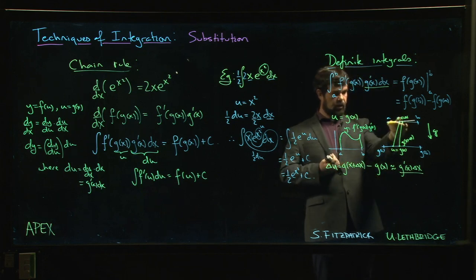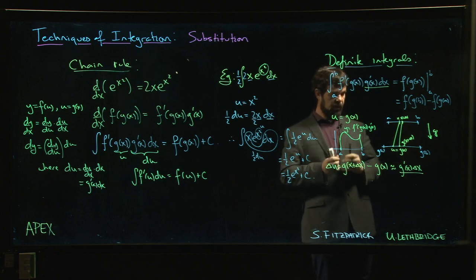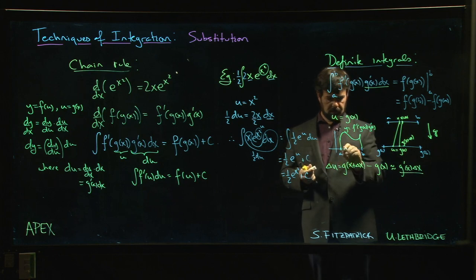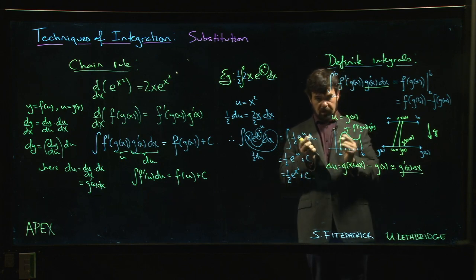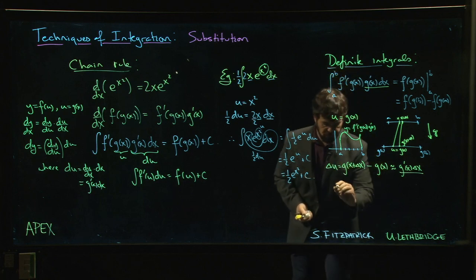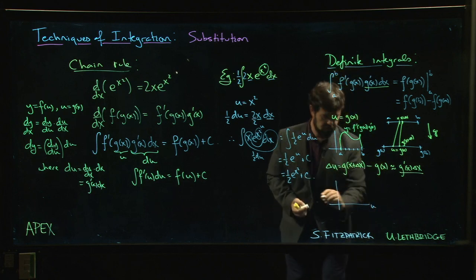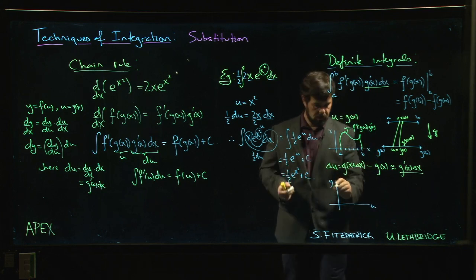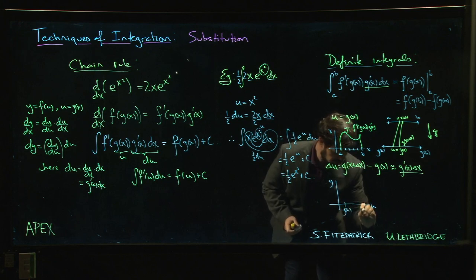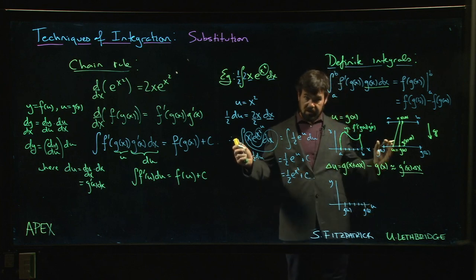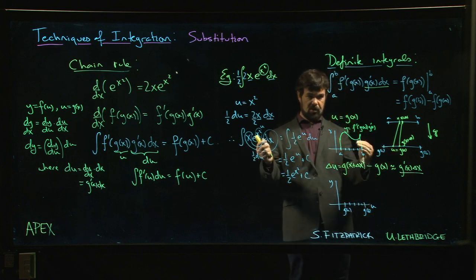So what happens when you change from the x variables to the u variables is all the bases of your rectangles, right, your bases of the rectangles, they're all being stretched or shrunk depending on the function. They're being stretched or shrunk by a factor of G prime, right? So over on the u side of things, right, if we're doing u and y rather than x and y, well we should be going from G of a to G of b.